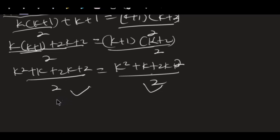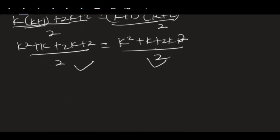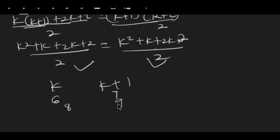Our statement is true for all natural numbers. Because if k is true then k plus one is true — if k is six then seven will be true, if k is eight then nine will be true, if k is one thousand then one thousand and one will be true — and it is true for every natural number. Thank you for watching this video. Hope to see you in the next one — please comment, subscribe, share, and like.